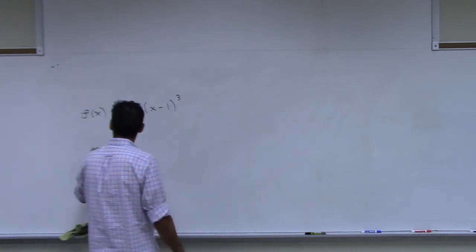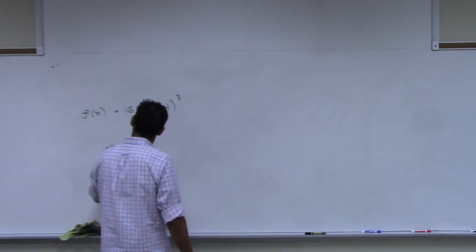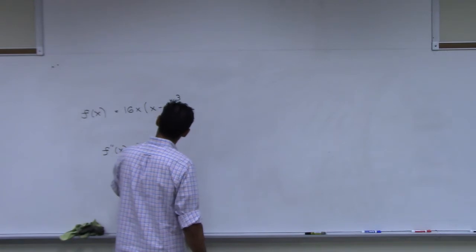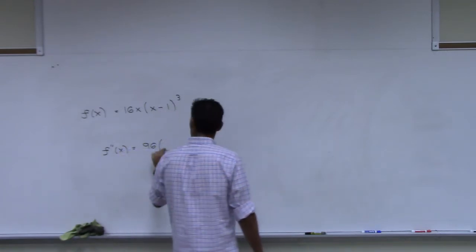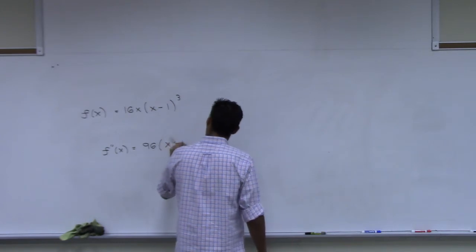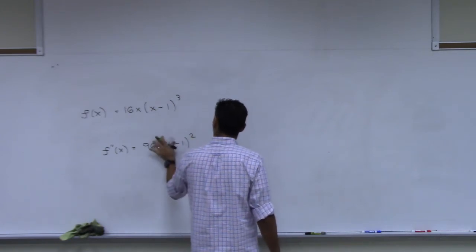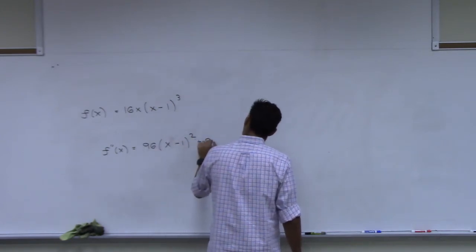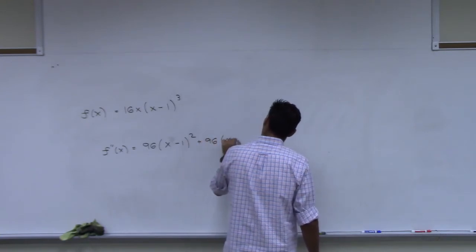So what is the second derivative? 96, open parentheses. 96, parentheses. X minus 1, square. No, x minus 1, so it's here. Close parentheses, right? Plus 96x, open parentheses, x minus 1, close parentheses.